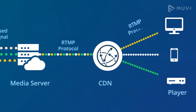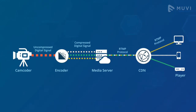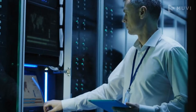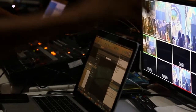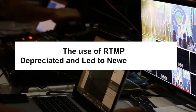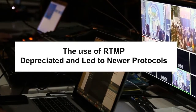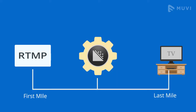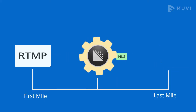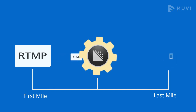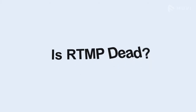The transcoded content is transported to a CDN, which in turn distributes the live stream to various playback devices and browsers around the world. However, due to growing security issues and emerging technology, the use of RTMP depreciated, leading to newer protocols. RTMP was still ingested by servers in the first mile, but then converted into a protocol matching the video player's needs.